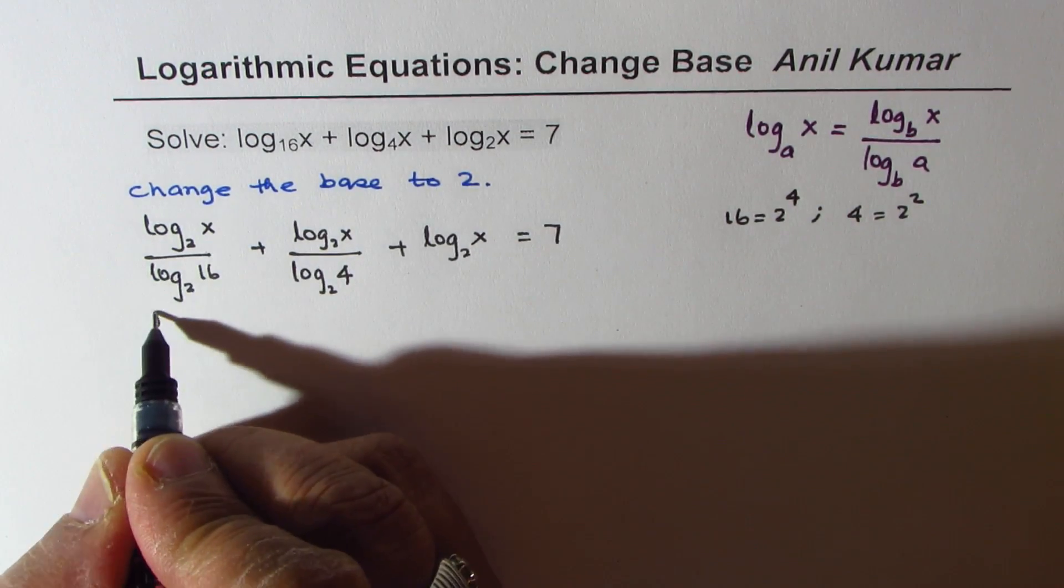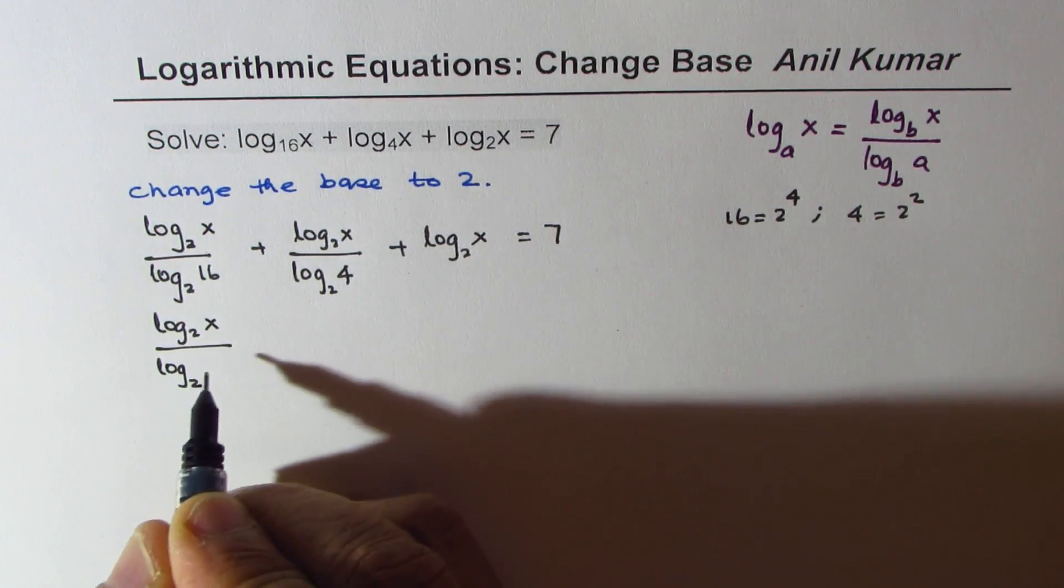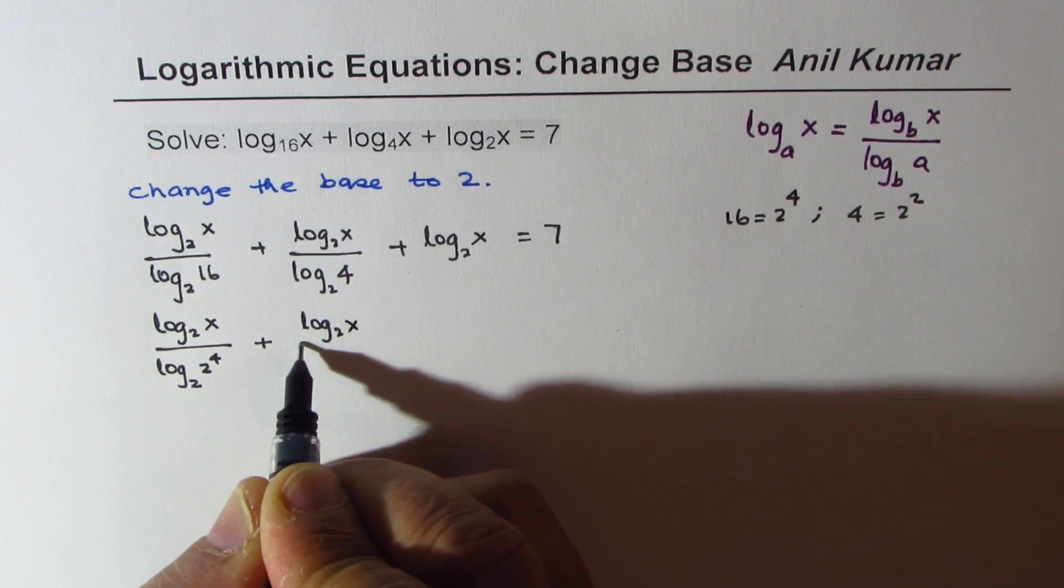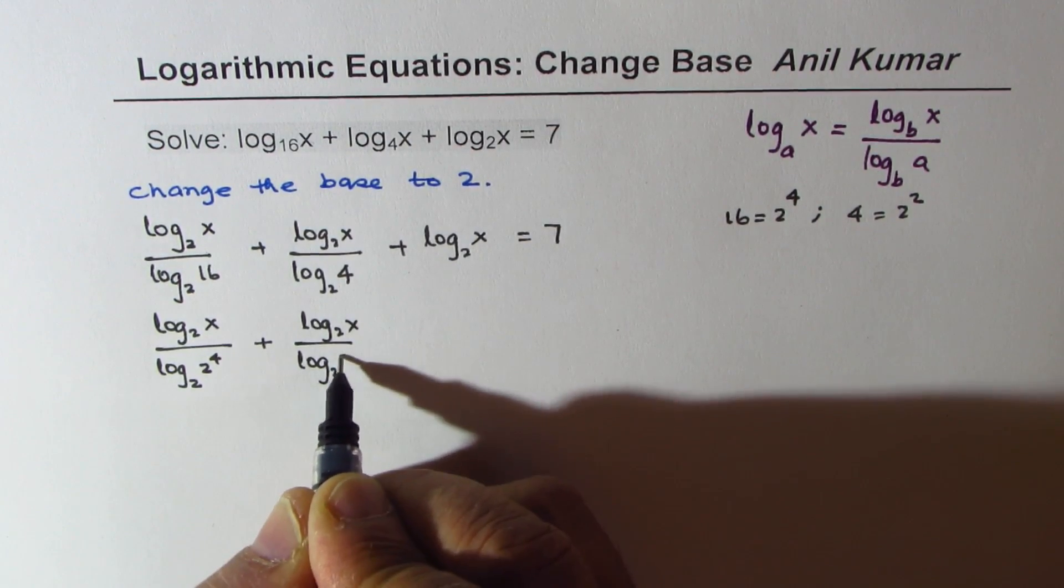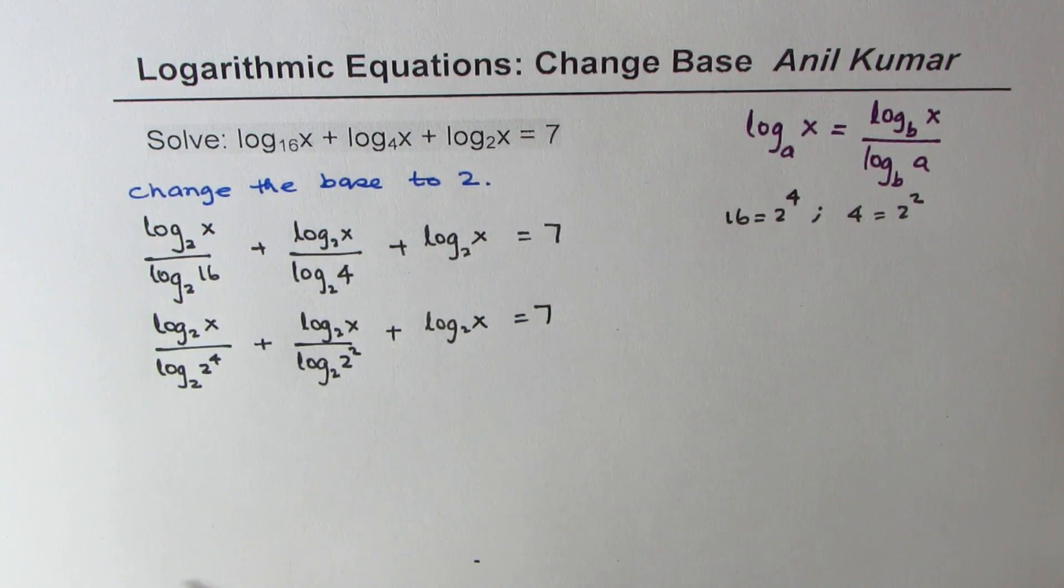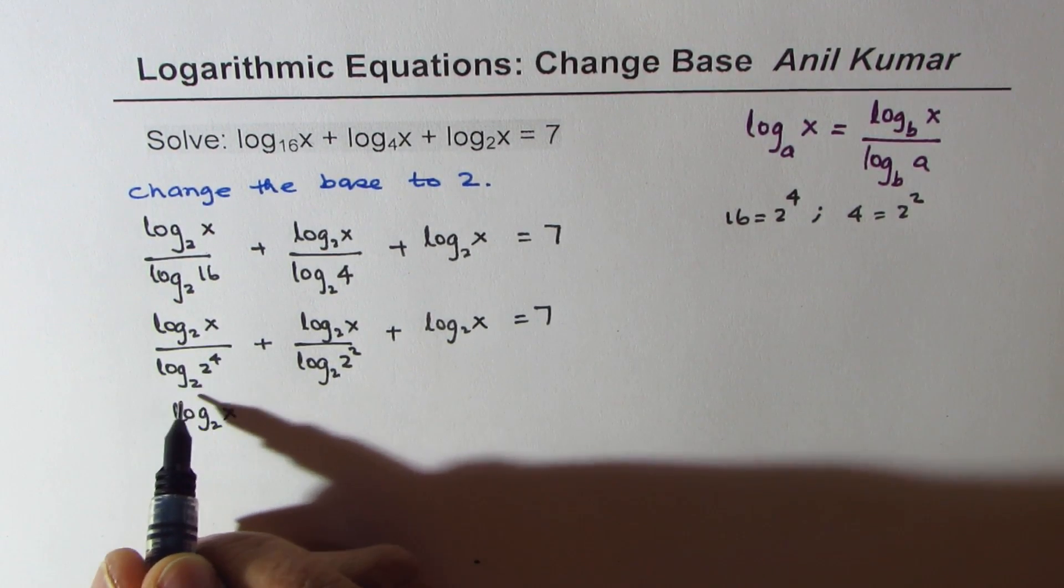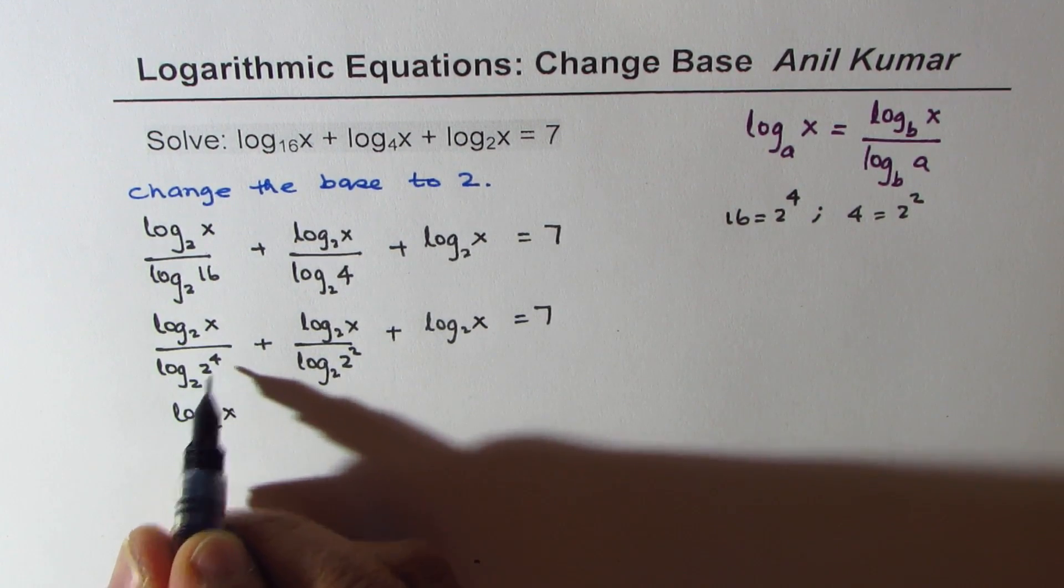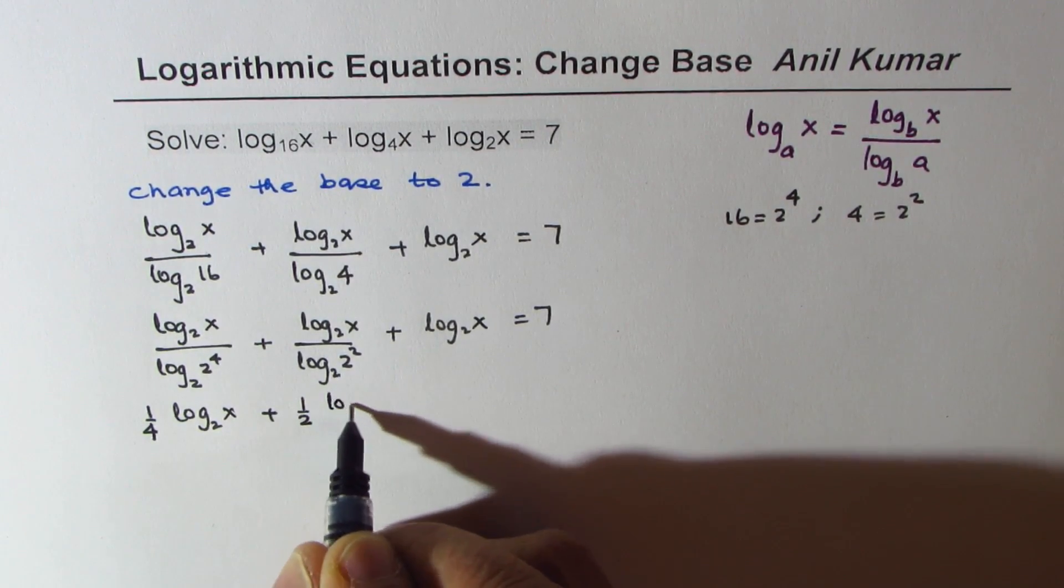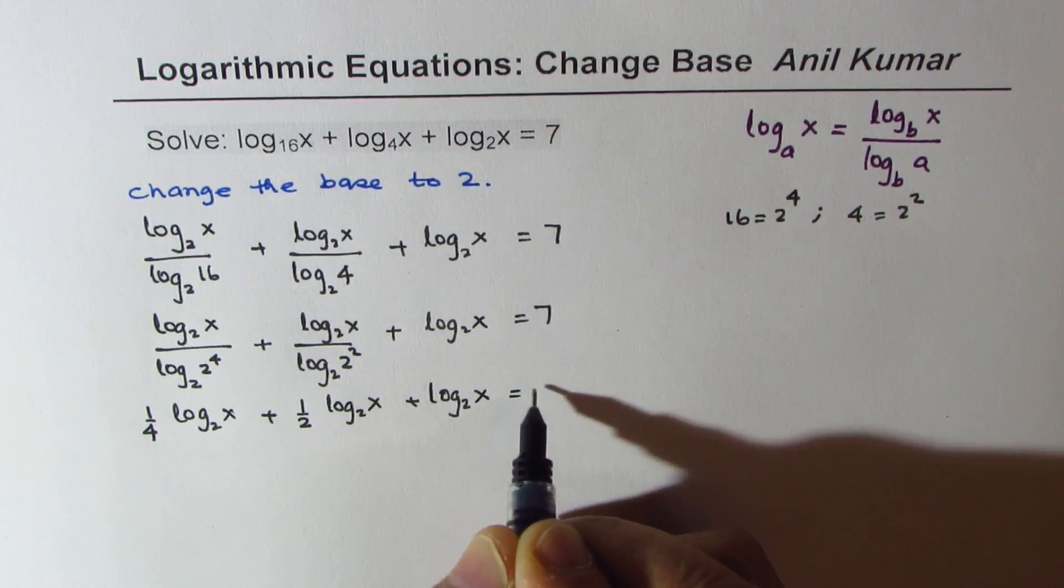So let me rewrite this as log base 2 of x over log base 2 of 2 squared plus log base 2 of x equals 7. Now that gives us log base 2 of x and 2 to the power of 4 when to the base of 2 will be 4. So we get 1 over 4 here. Plus we get half of log base 2 of x plus log base 2 of x equals 7.